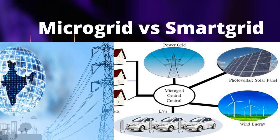Integration of Renewable Energy. Microgrid: microgrids often incorporate renewable energy sources at a small scale and can be designed to be more sustainable and environmentally friendly. Smart Grid: the smart grid aims to integrate renewable energy sources across the entire grid to reduce greenhouse gas emissions and dependence on fossil fuels.